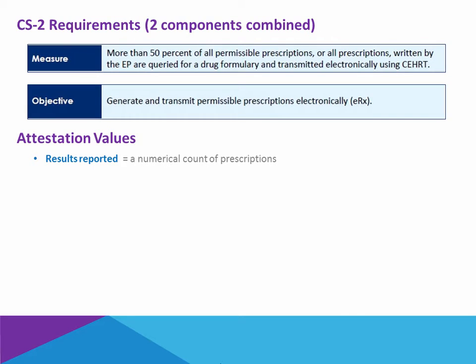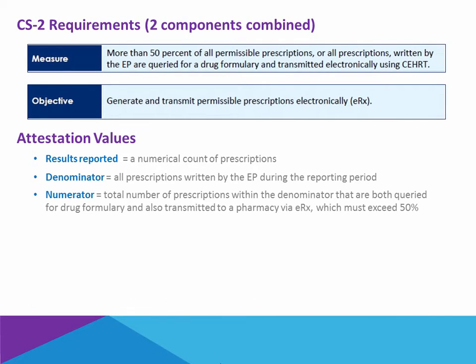At the end of the reporting period, when you do your attestation, the results reported will be numerical, representing a count of prescriptions — denominator and numerator numbers. The denominator for Core Set 2 is all prescriptions written by the eligible provider during the reporting period. The numerator is the total number of those prescriptions that are both queried for drug formulary and transmitted electronically to the pharmacy.